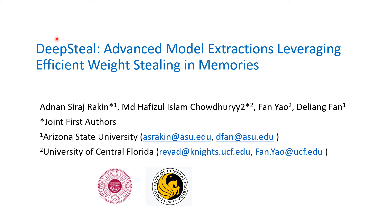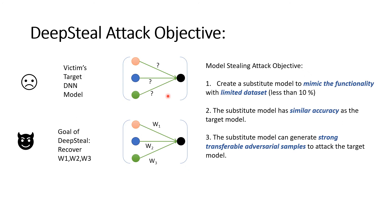In this paper we proposed a new attack called Deep Steal. The objective of the Deep Steal attack is to steal the victim DNN model. Ideally, the attacker wants to mimic the functionality of the DNN model with limited data, with similar accuracy, and potentially mount strong adversarial example attacks against the target model.